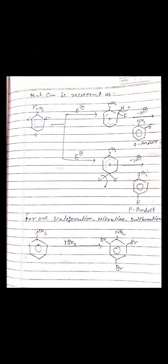इस mechanism में दो product बनते हैं — Ortho product और Para product। Examples के लिए: Halogenation, Nitration, और Sulfonation।